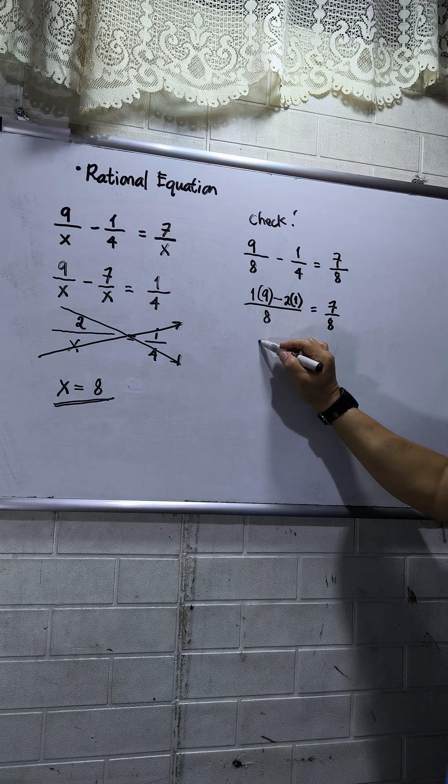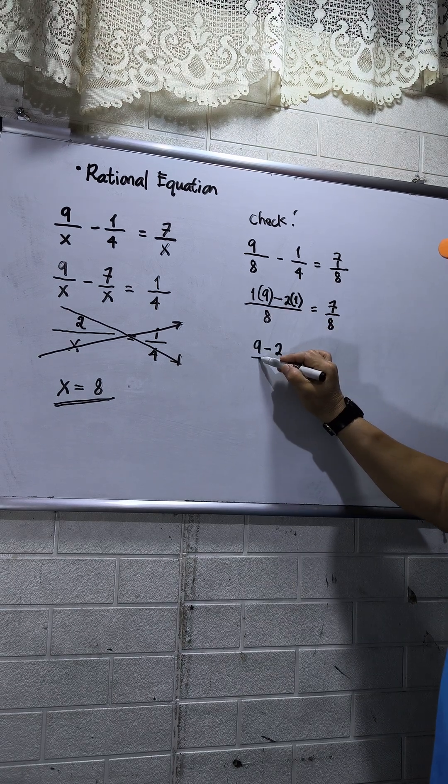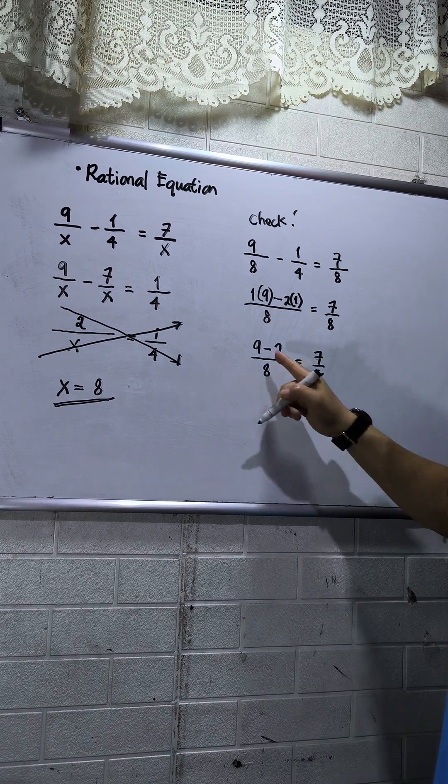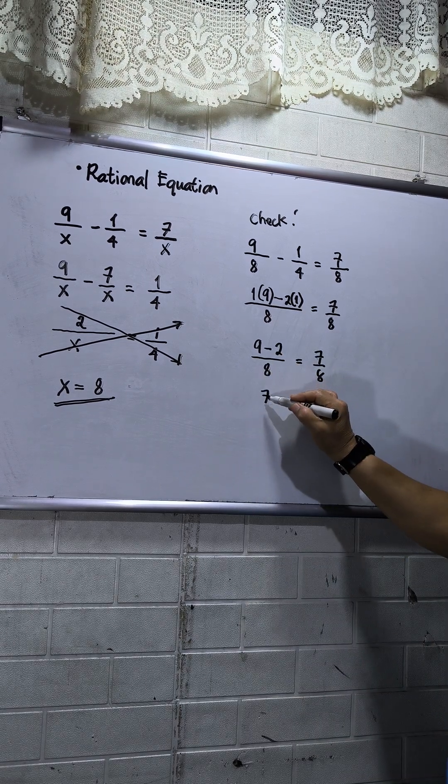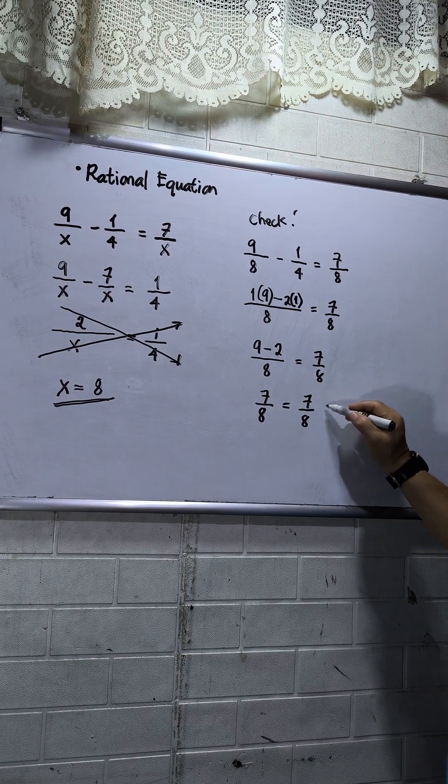So 1 times 9, that will be 9. 2 times 1, that will be 2. Then this will be over 8. This will be equal to 7 over 8. So 9 minus 2, that is 7 over 8, equals 7 over 8. So this is true.